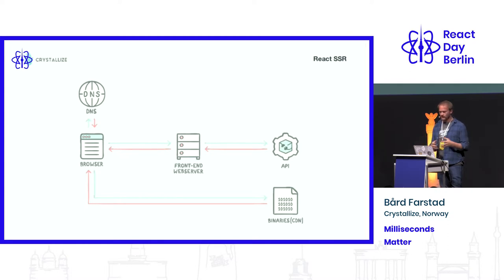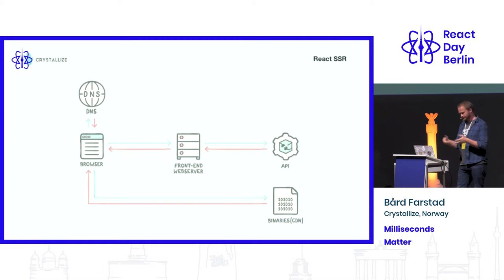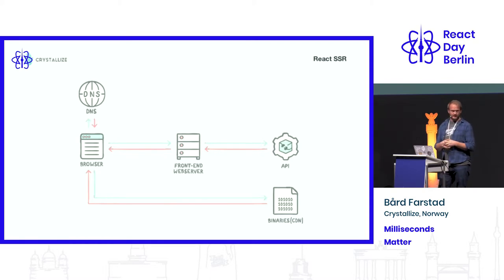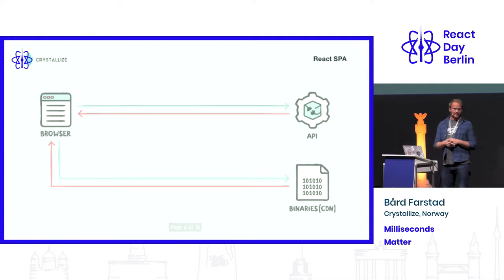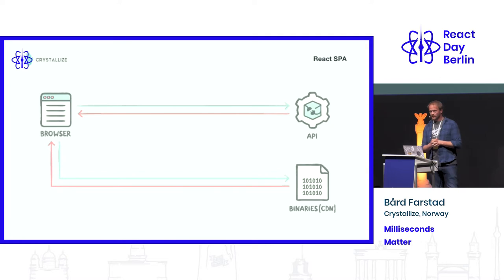SSR basically means that you get a static page on the first load. It's fast — you just have the DNS ping and you have the front-end web server delivering you some HTML, and you fetch some statics, which is nice. And of course then you have the benefit of SPA following the initial server-side rendered React webshop.